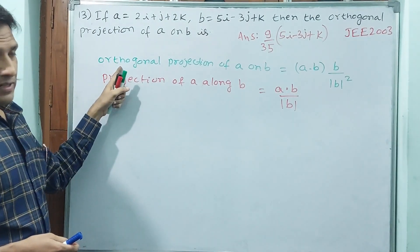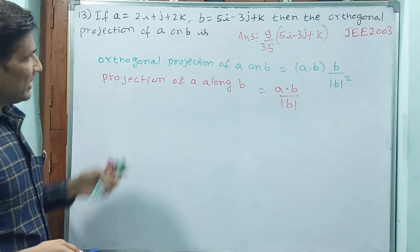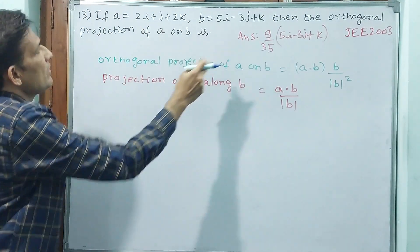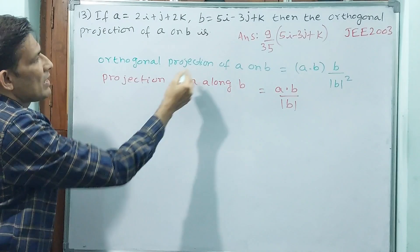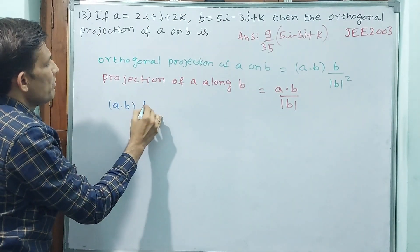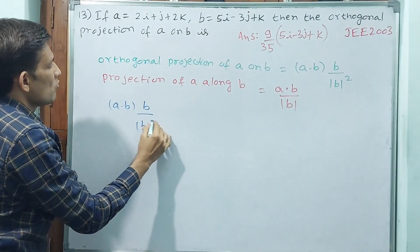Now we are going to do this one. This one also we are going to do next. Let us see how we are going to solve this. That means orthogonal projection of A on B, what I am going to do? A dot B into B by modulus of B square.